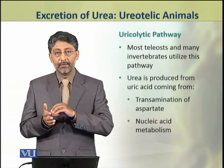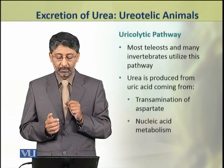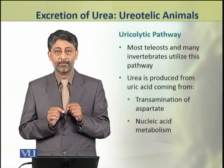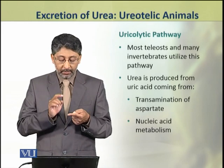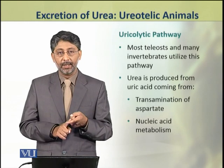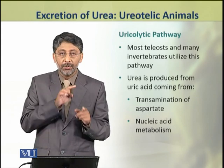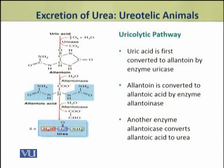Now we shall discuss the ureolytic pathway. Most teleosts and many invertebrates utilize this pathway. Urea is produced from uric acid, which comes from transamination of aspartate and from nucleic acid metabolism. In the ureolytic pathway, uric acid is first converted to allantoin by the enzyme uricase.